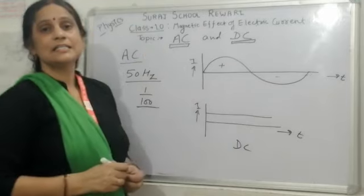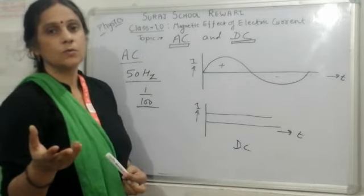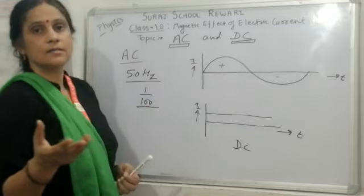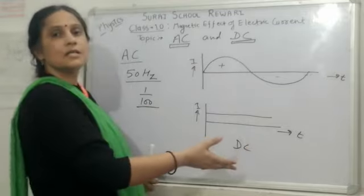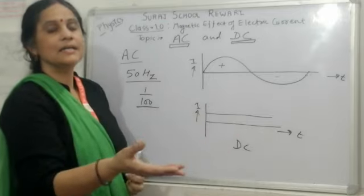We can get AC current from AC generator, from bicycle dynamo and car alternators. And the sources of DC current are car battery, dry cell, dry cell battery, etc.